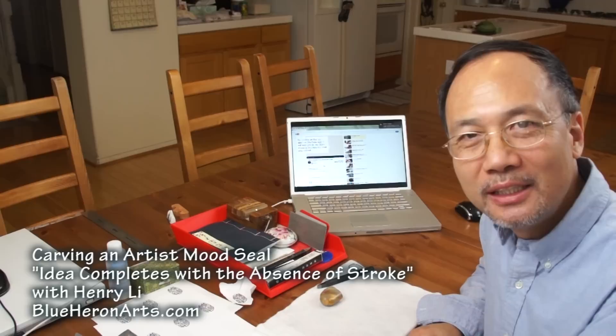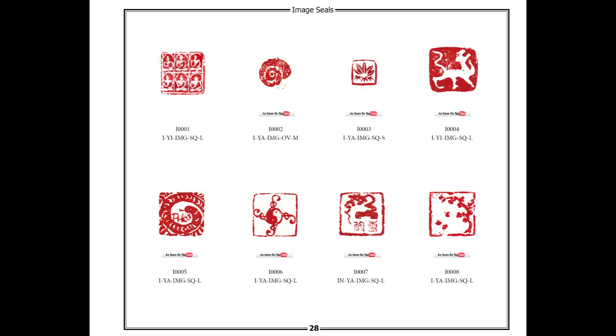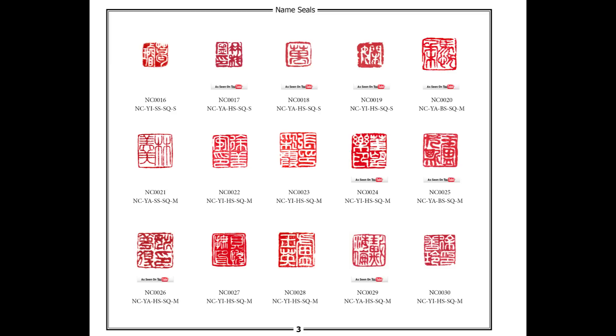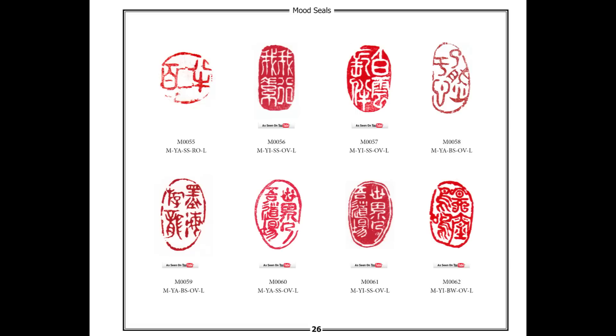I just released a new e-book called a seal imprints collection of Henry Lee. You can find all the seals I've done since the early 80s up to the end of 2012 and there are about 207 videos linked to those seals.